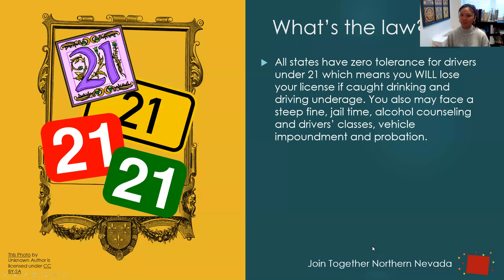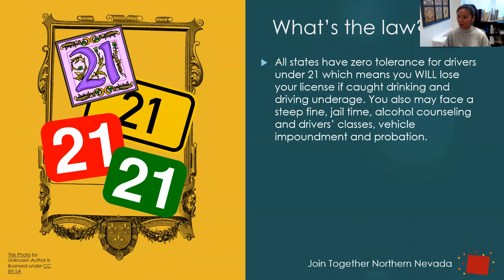So what is the law? We all know that you can't drink until you're 21 years old, but even if you are under 21 and you are getting drinks from your parents, your friends, or your older siblings, it is still illegal. If you're drinking at home and no one else knows, it is still illegal. So if you are under age 21, no matter how you got the alcohol or where you're drinking, it is still illegal. All states have zero tolerance for drivers under 21, meaning you will lose your license if you're caught drinking and driving underage.